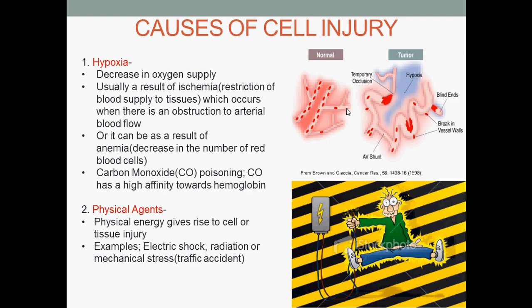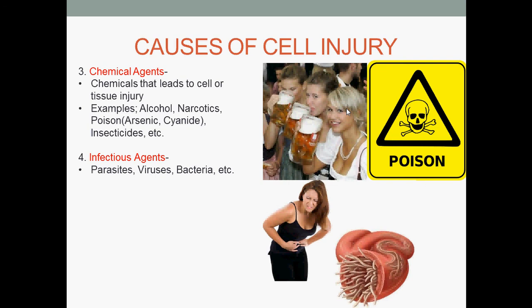Physical agents also give rise to cell or tissue injury, usually as a result of energy channeled to the cell through electric shock, radiation, or mechanical stress such as from a traffic accident. Chemical agents can similarly lead to cell or tissue injury — for instance, alcohol or narcotics, poisons such as arsenic and cyanide, and insecticides.